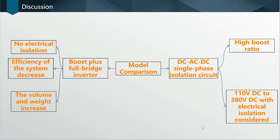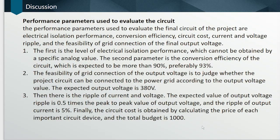Hello everyone, I'm Xiaomin Song, and I will present the rest of our presentation. In terms of model selection, there are three shortcomings of the boost full-bridge approach: there is no electrical isolation, the efficiency of the system is low, and the volume and weight is large. So we designed a DC-to-AC-to-DC single-phase isolation circuit. It has a high boost ratio making efficiency high, and electrical isolation is incorporated into our circuit.